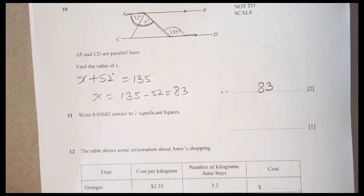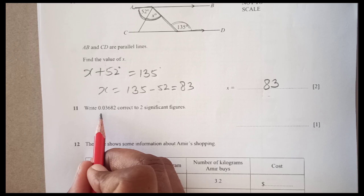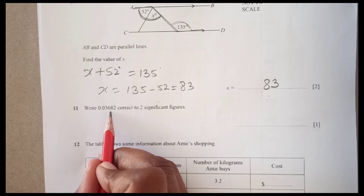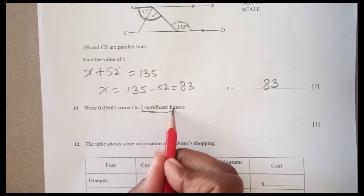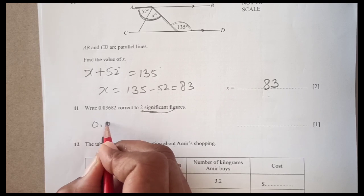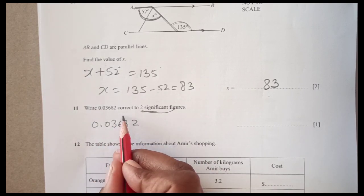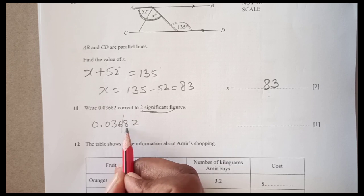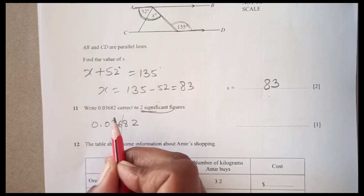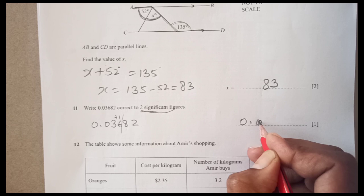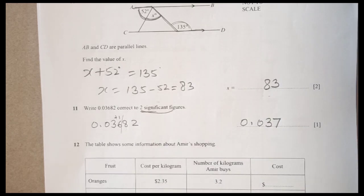Number 11, 0.03682 correct to 2 significant figures. 2 significant figure is going to become over here. This is more than 5, that is going to add one here. This is 0.037.